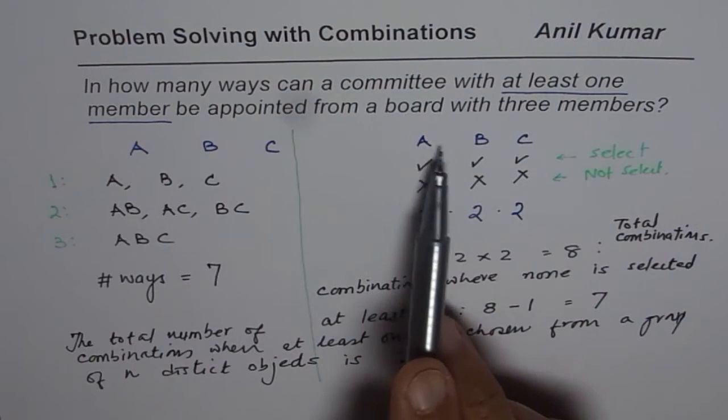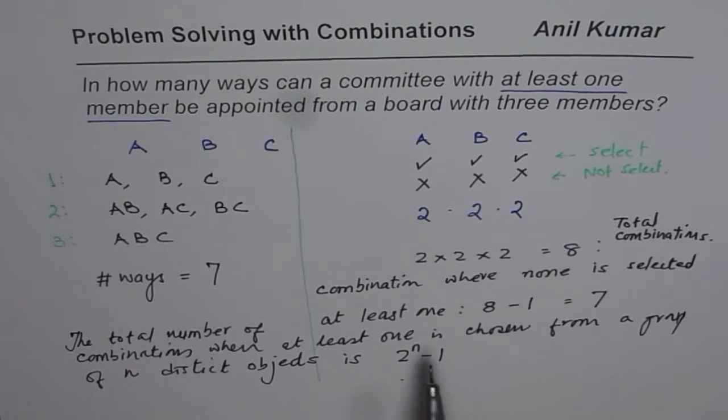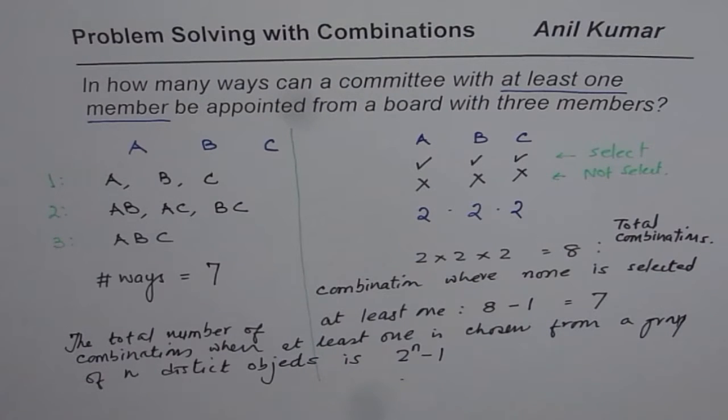And distinct objects is two to the power of N minus one. So in this case, since there were three members, the answer is two to the power of three minus one.